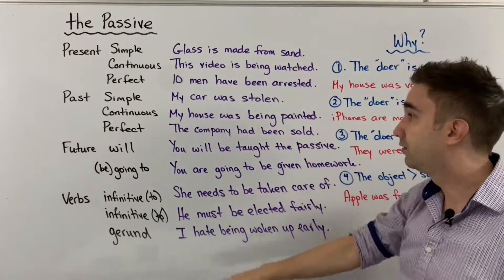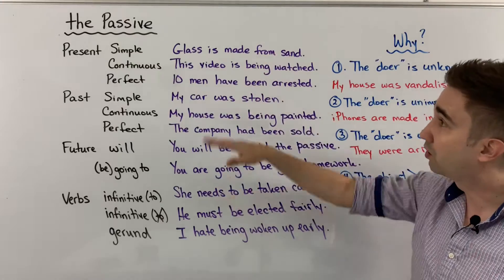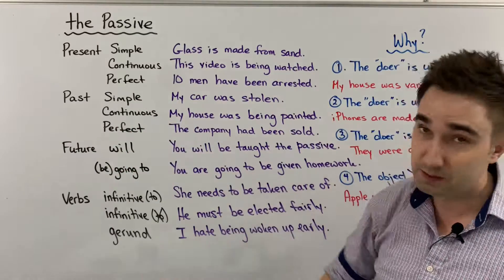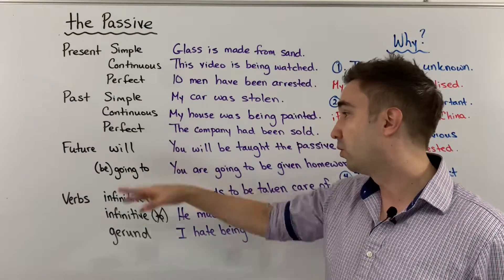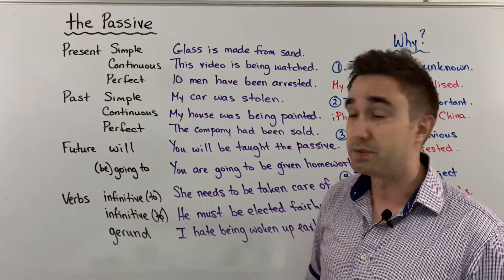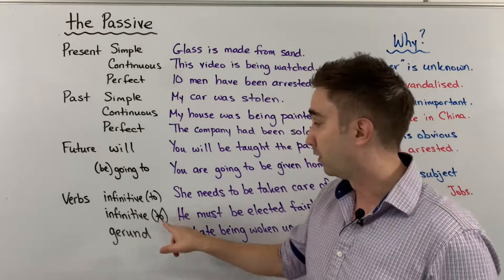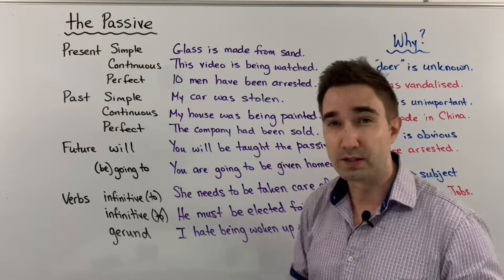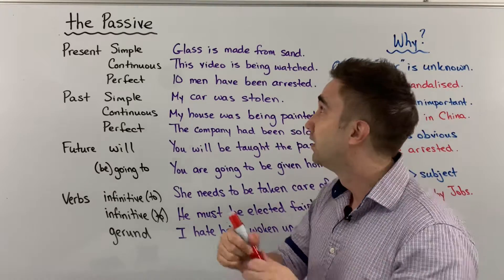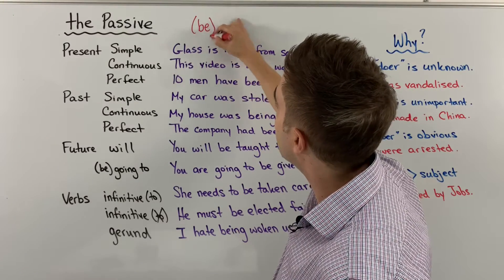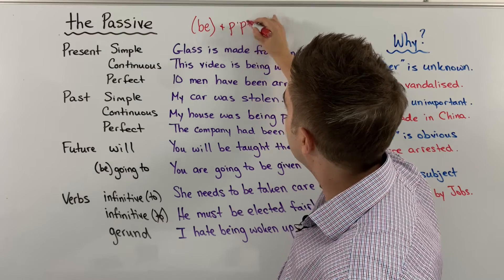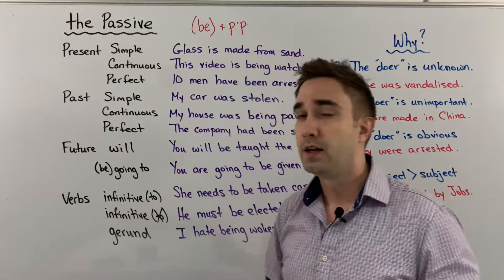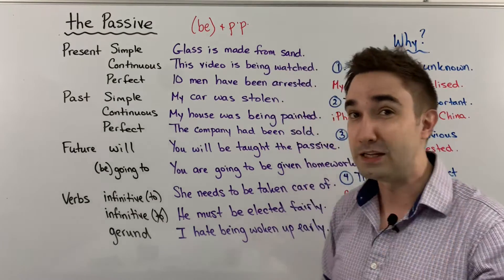You're going to see all of these different tenses: present simple, present continuous, present perfect, past simple, past continuous, past perfect, future with will, future with going to, and then some different types of verbs like infinitive with to, infinitive without to, and a gerund. One thing you're going to notice is that every single sentence has these two things: a form of be plus the past participle. That's really, really important. All of our passive sentences are going to have that, and I'm going to underline those as we go through each example.